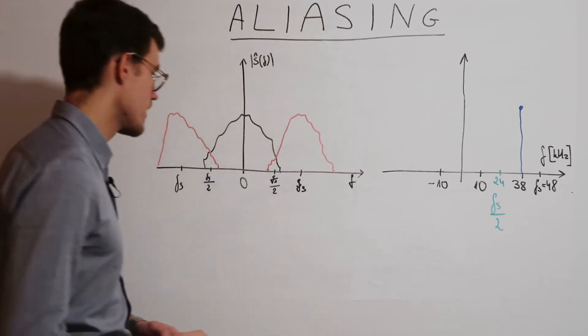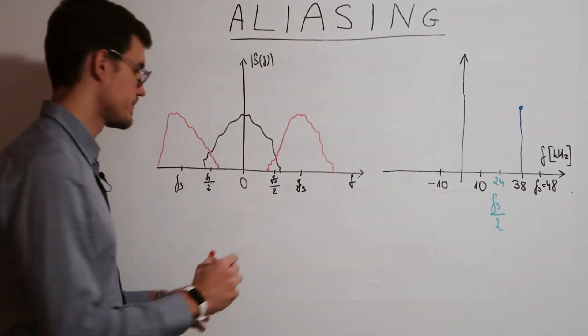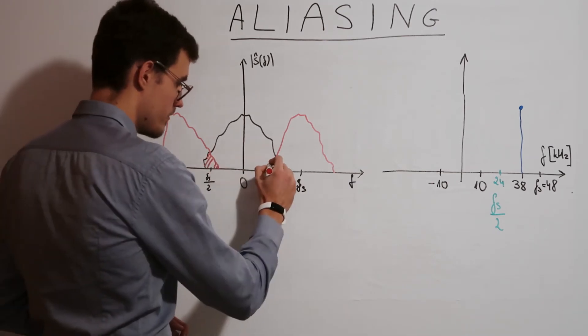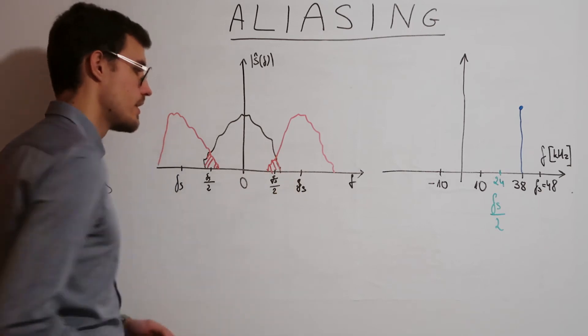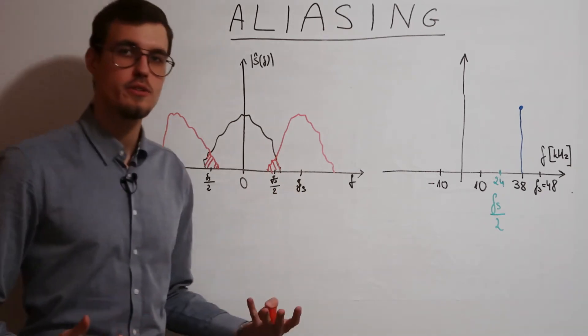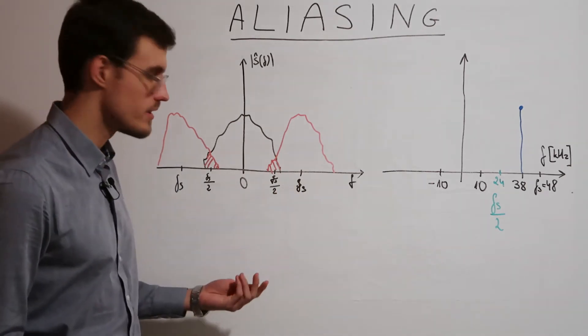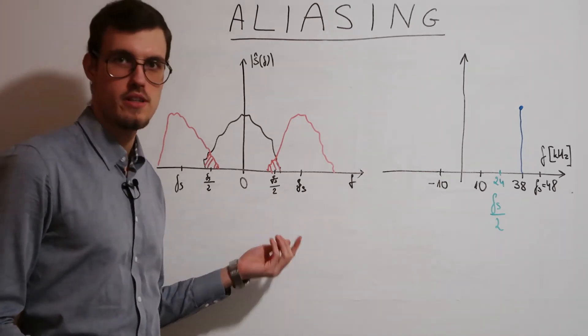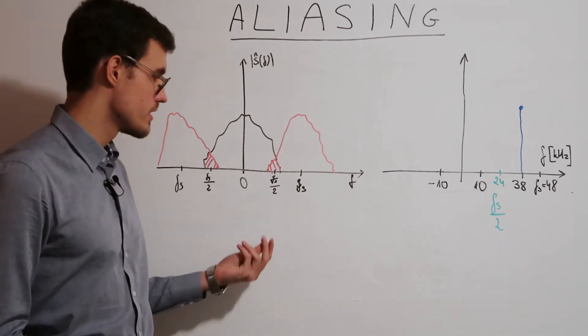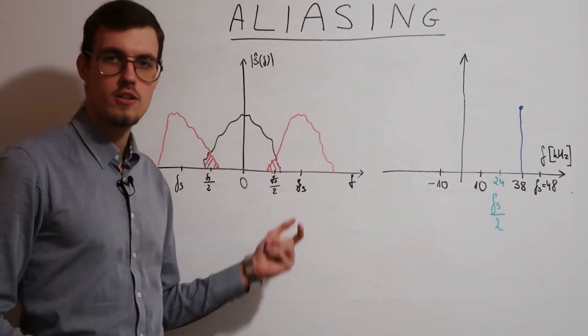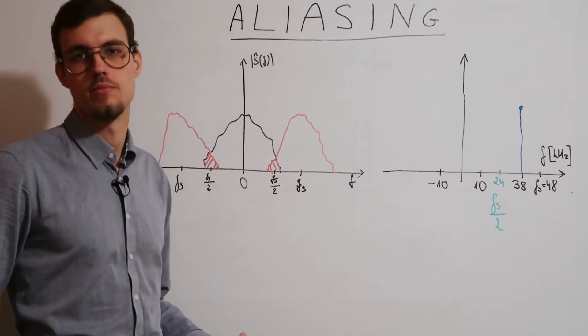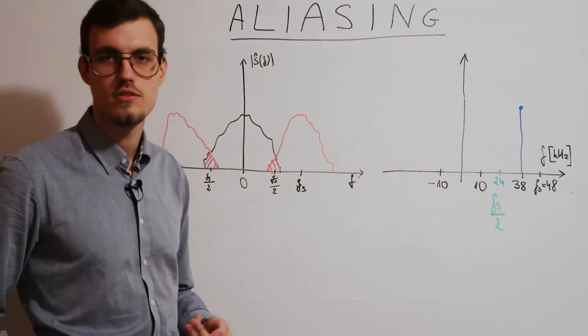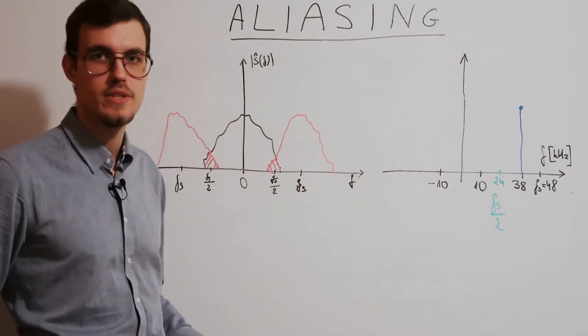And what happens over here is that the frequency components overlap. And since we assumed that the original signal had frequencies not higher than the Nyquist frequency, after reconstruction around this area we'll get a frequency component that primarily wasn't there or it will have a changed twisted amplitude.